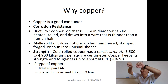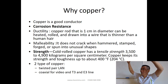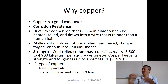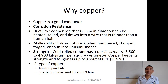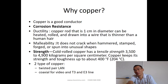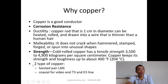Copper is also malleable — it's a soft metal that you can shape without cracking, which means current will continue to flow. It also has a very strong tensile strength and can withstand high temperatures up to 240 degrees Celsius. There are two types of copper media: twisted pair for LAN, and coax for video and T3/E3 links.